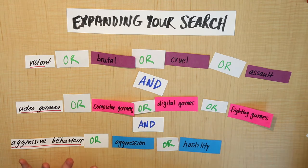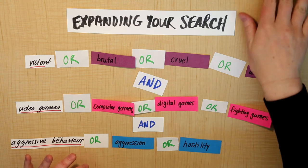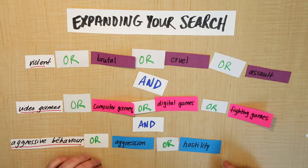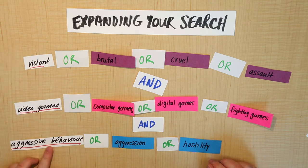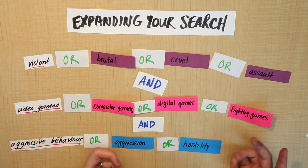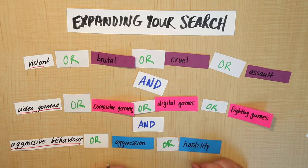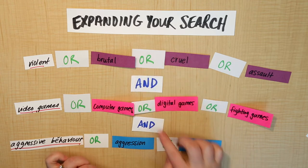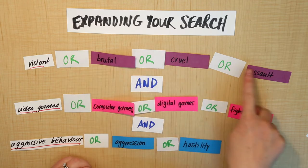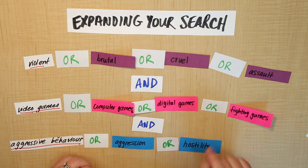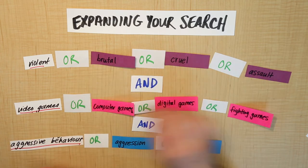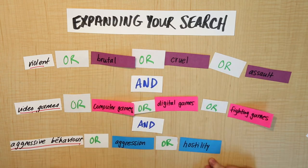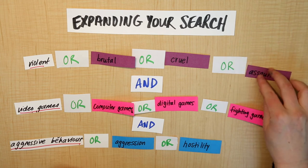All right, so what this does is this expands out our search results. If we had just done a basic search with violent video games and aggressive behavior, we would have gotten a certain amount of search results. But as soon as we start using these connector words, we're going to have lots more options. So this is the first technique you can use to expand your search and get more results: giving the database more options for each of your terms using the connecting word OR.